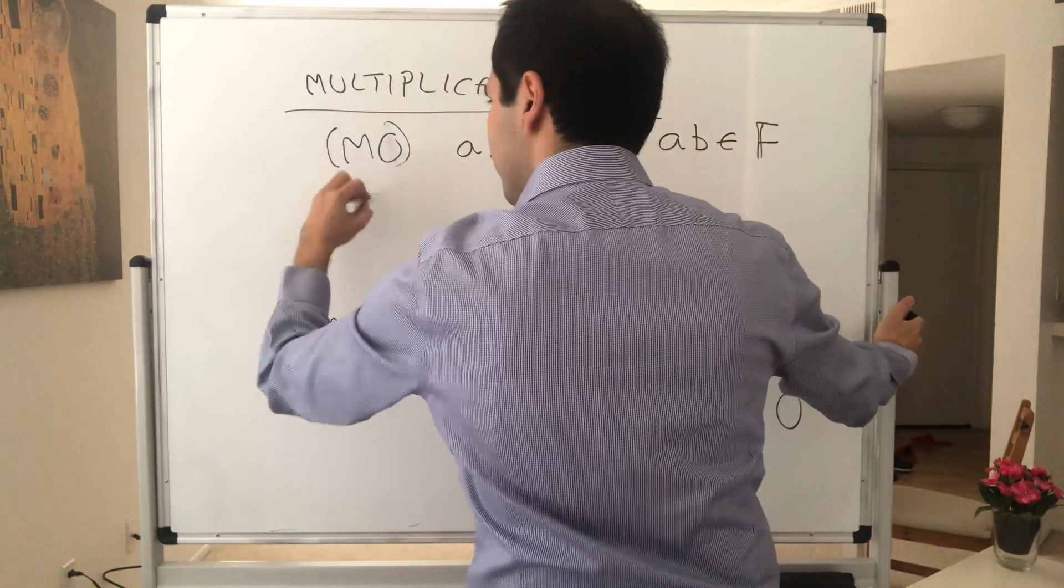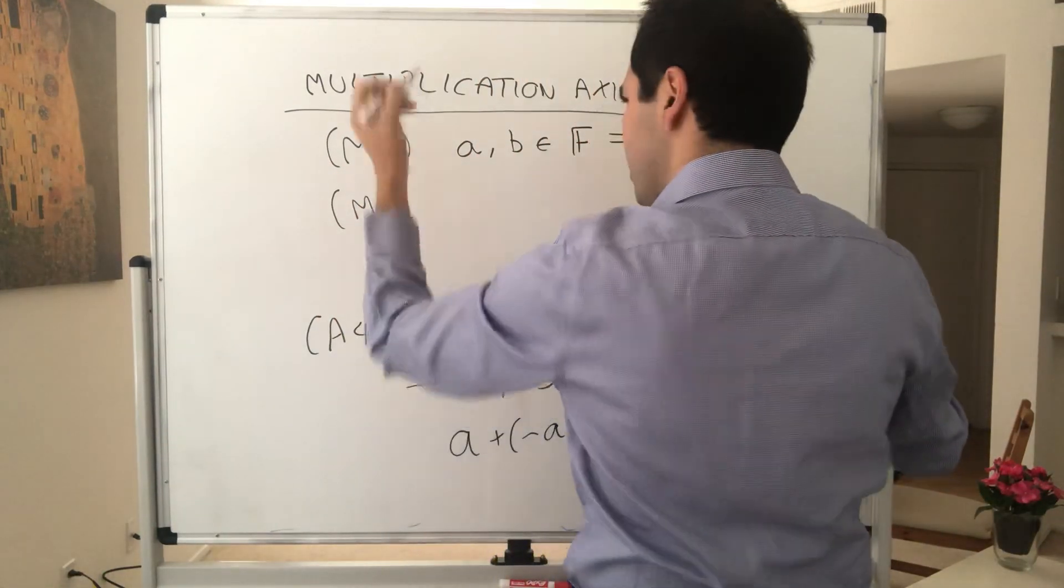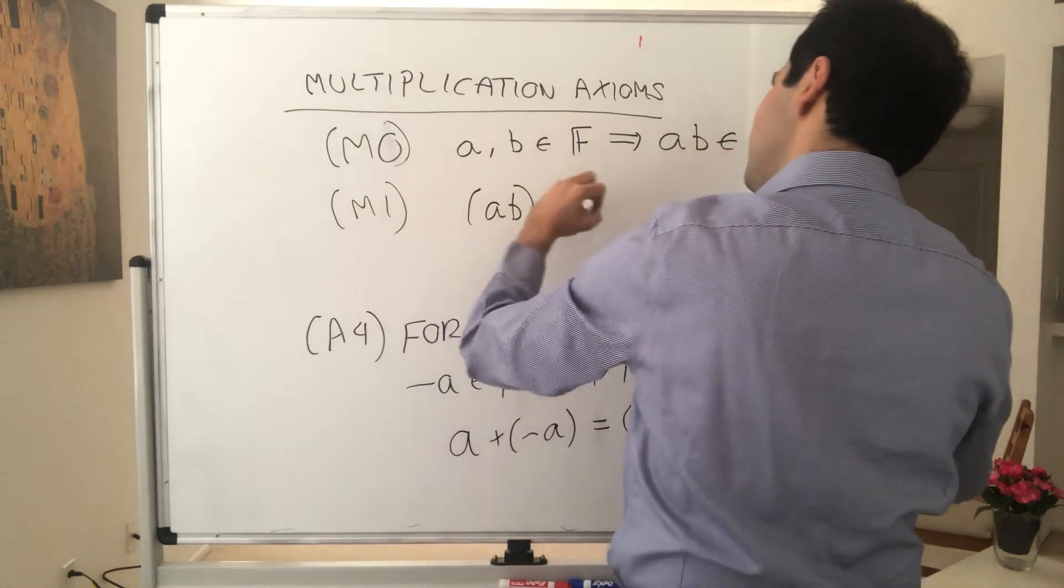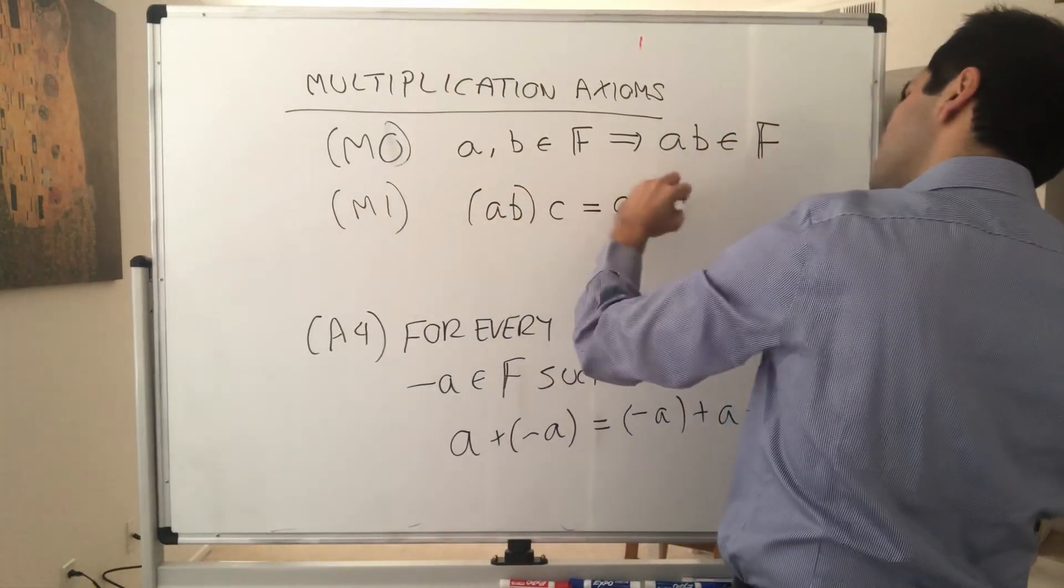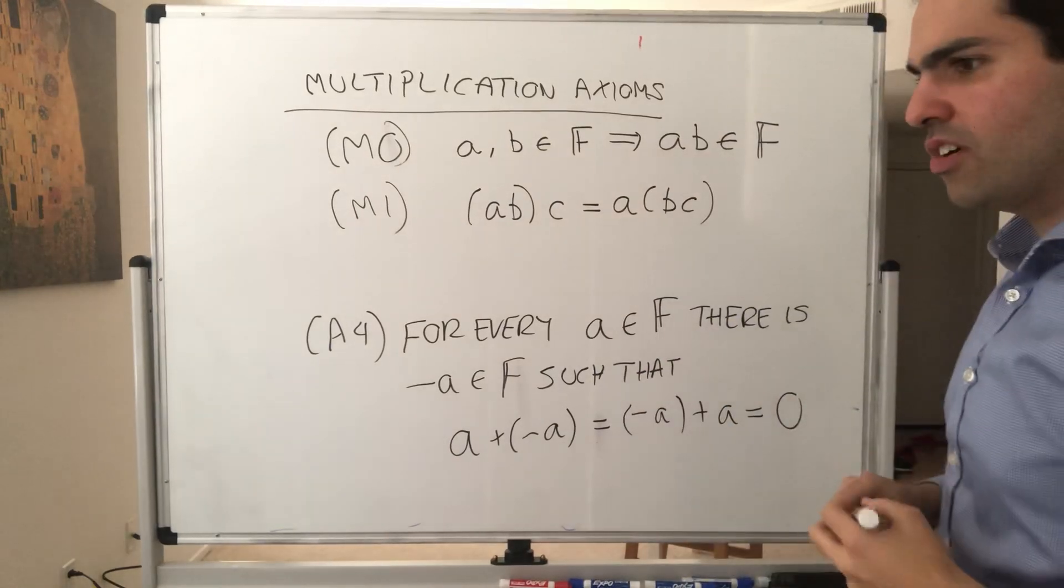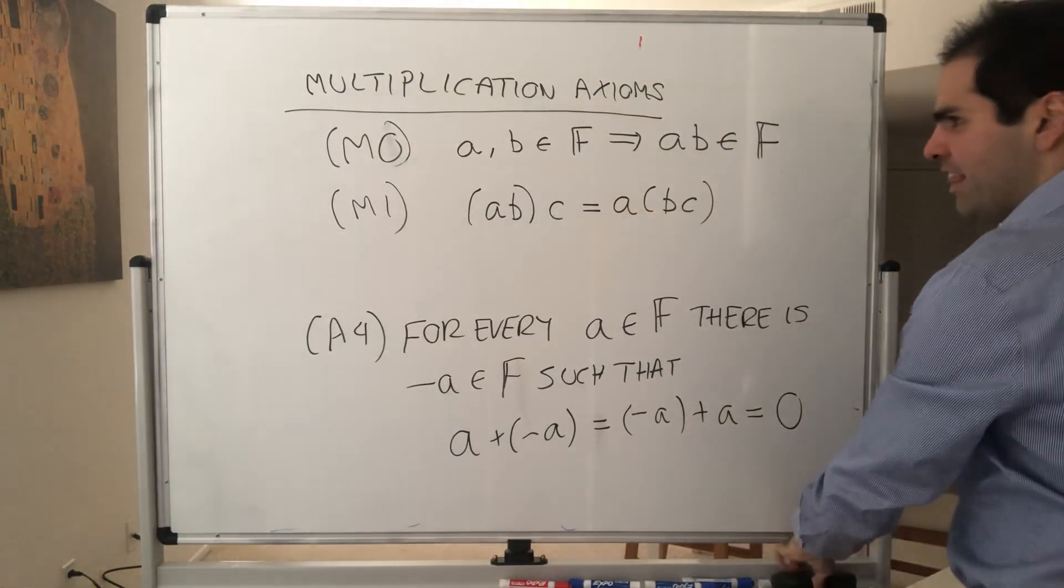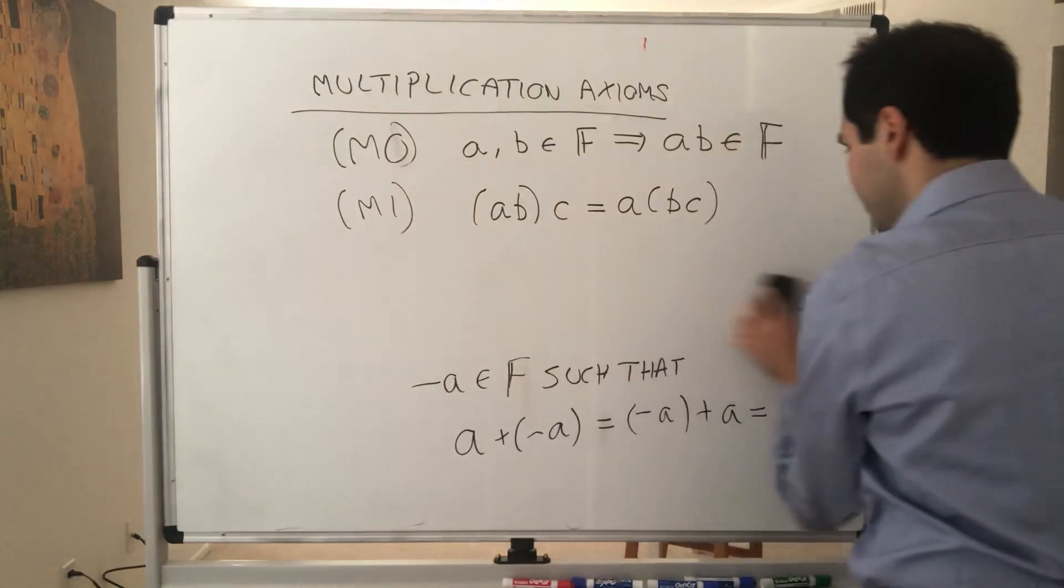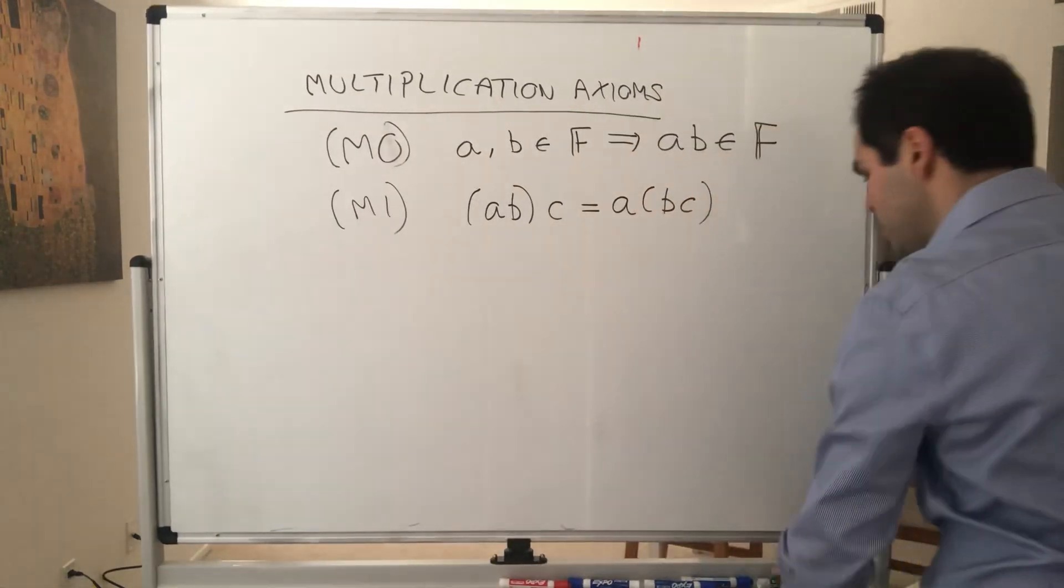And then, again, order doesn't matter. So a times (b times c) equals (a times b) times c. So that's called associativity. And then commutativity. So a times b is b times a.